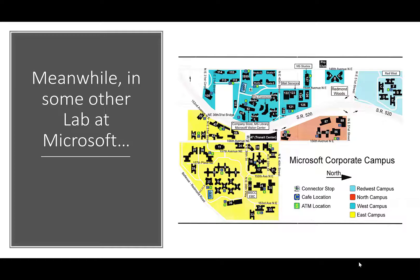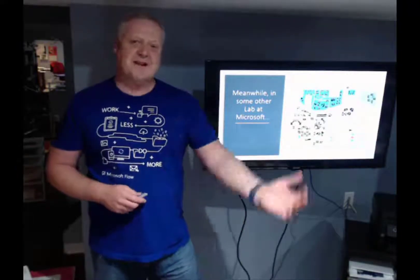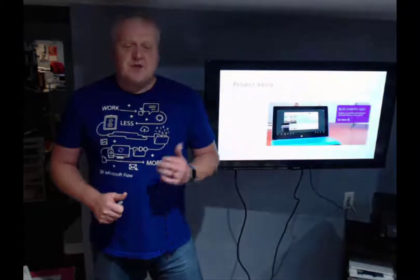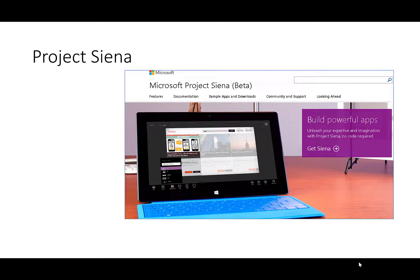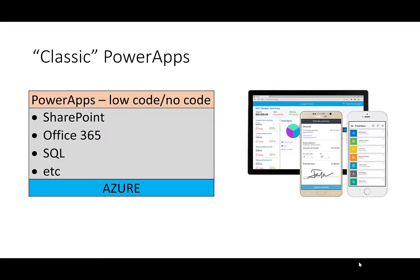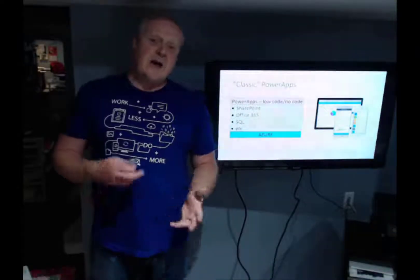Meanwhile, at Microsoft, in some other lab on the other side of the campus, they were working on some other really cool stuff. There was Project Sienna — the ability for citizen developers or makers to build customized unique business apps. This eventually became what we call classic Power Apps, where you could draw controls on a screen the same way you'd use PowerPoint, or like the old Access system. It was all web-based, low-code/no-code. The back end could tie to SharePoint, Office 365, or SQL — all sitting on top of Azure.